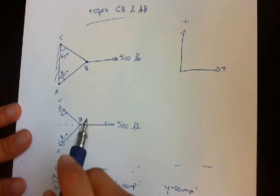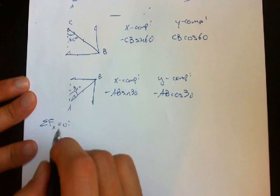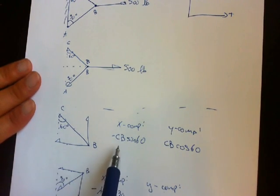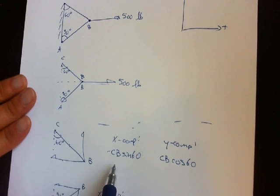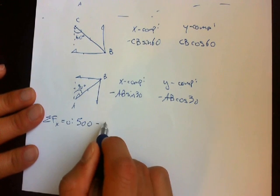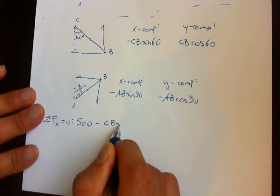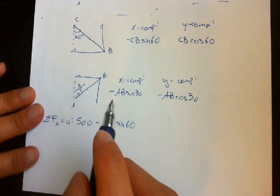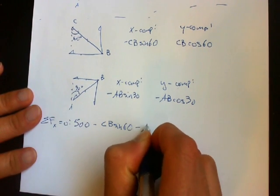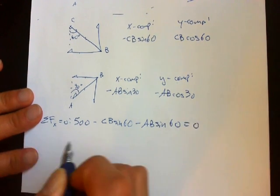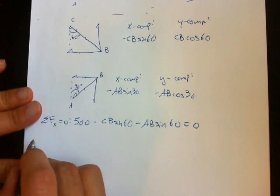First you have this force, which is 500 pounds. Then you've got your X component for the force CB, which is minus CB sine 60. And you've got the X component for the force in BA, minus AB sine 60 equals zero. And sum the forces in the Y component.